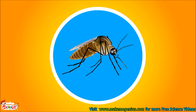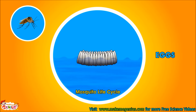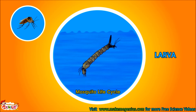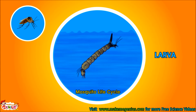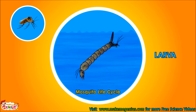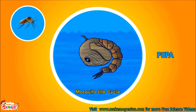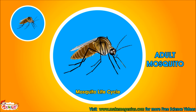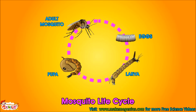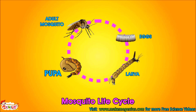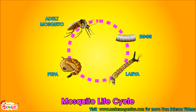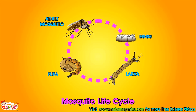Now let's see one more life cycle — it is about the mosquito. Mosquito hatches eggs on water. Then a larva comes out of it in water, which does not look like a mosquito at all. This larva develops into a pupa, which after further growth becomes a mosquito. Eggs, larva, and pupa — all things happen in water. That is why, to control the spread of mosquitoes, it is advised not to let water gather in open places, as these are very good places for the growth of mosquitoes.